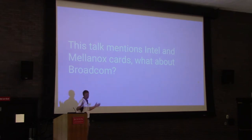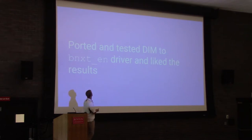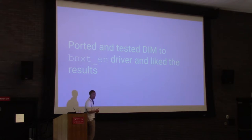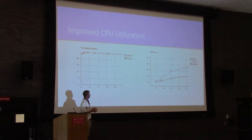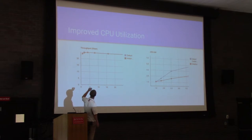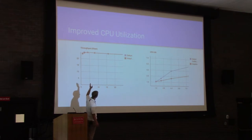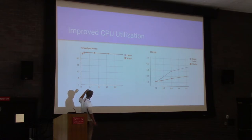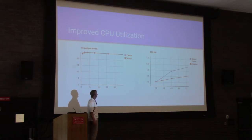I mentioned Intel and Mellanox — but what about Broadcom? We ported it to our driver and really liked what we saw, and others confirmed the same. In the case of default versus adaptive coalescing, throughput was essentially unaffected by the number of streams on a 25-gig NIC. Even with the small overhead of cataloging this information, we're right on par with throughput — there's no hit.